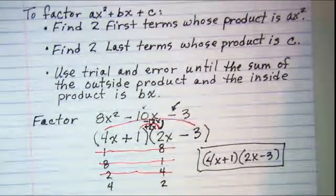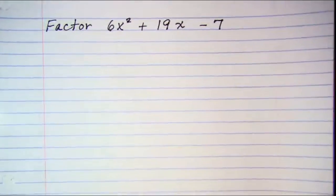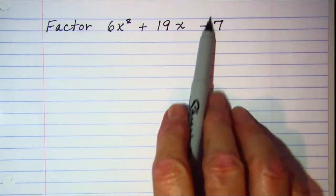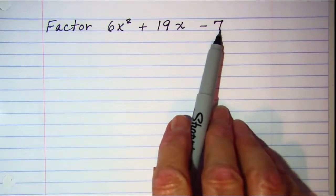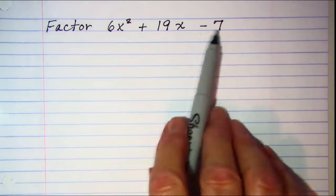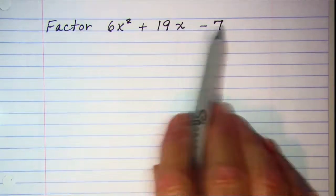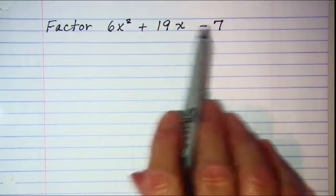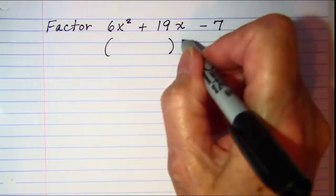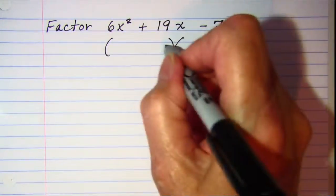Let's try another one. This one again, we're kind of lucky in that this is a prime number. You have a little bit more trial and error when you don't have a prime number as your lead coefficient or your final constant term.